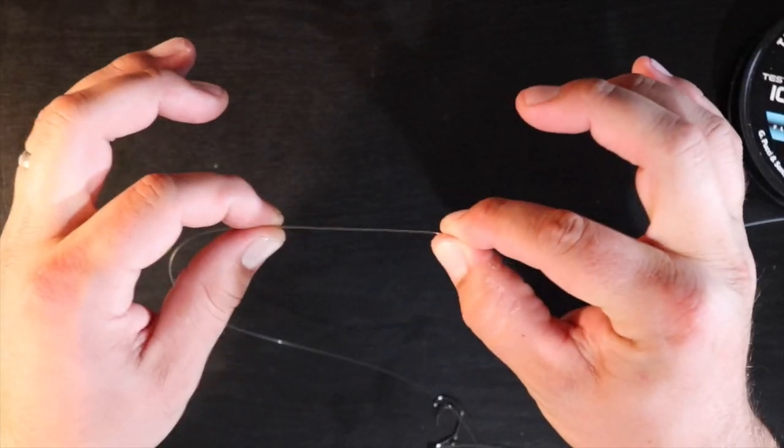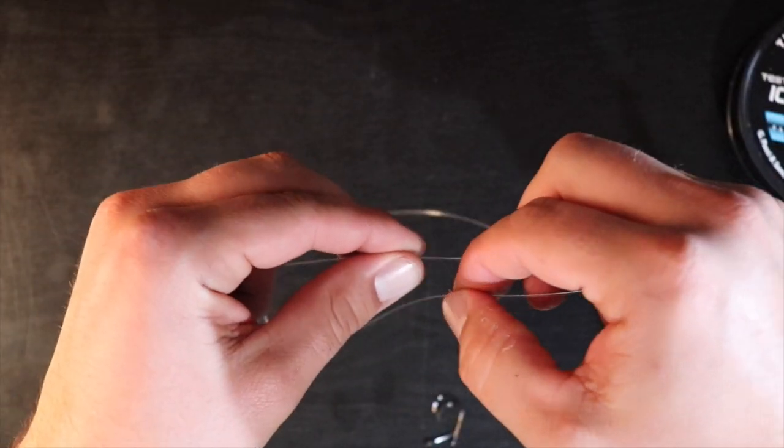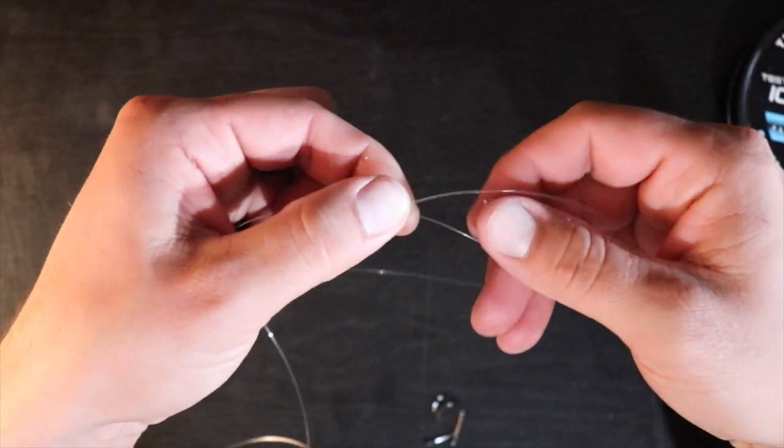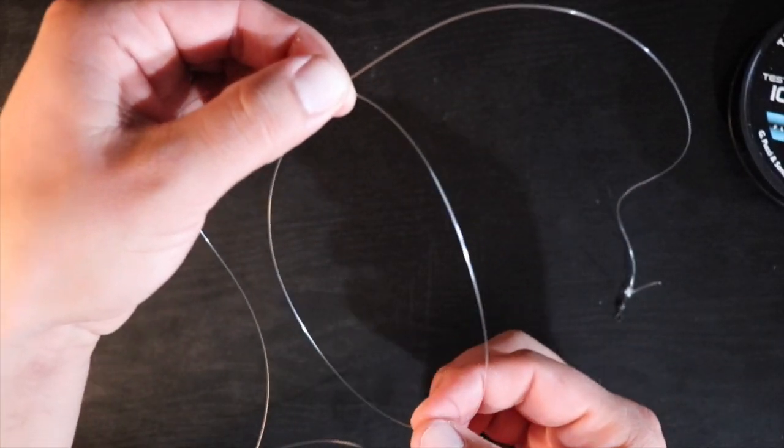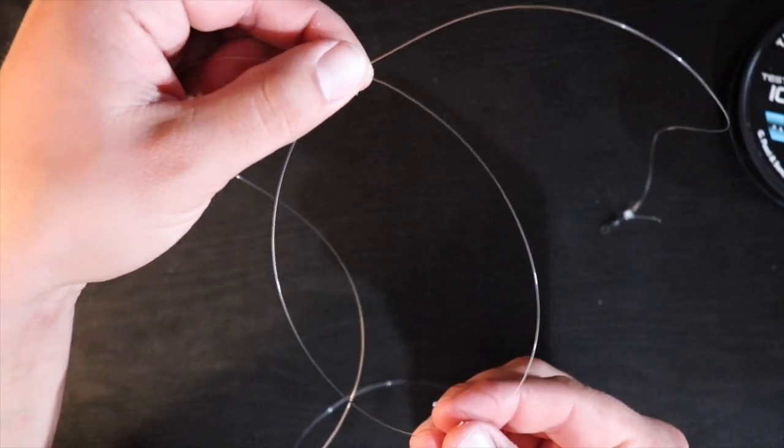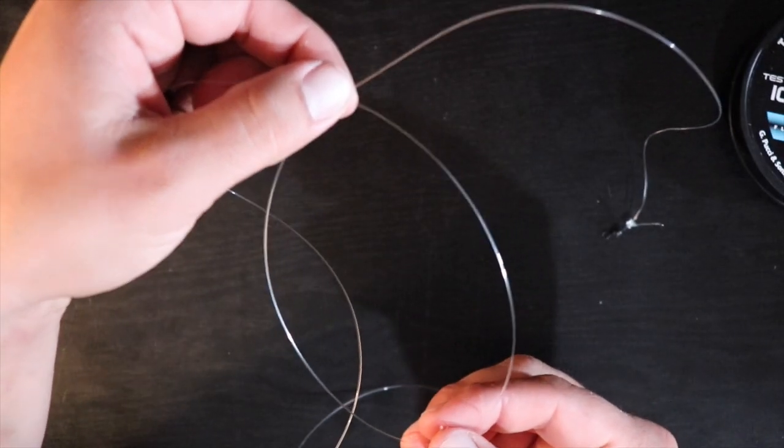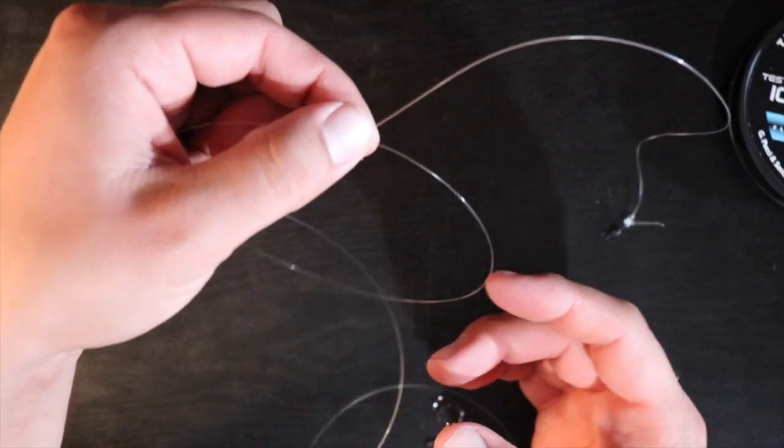All right, so once I got that barrel swivel on, I'll go ahead and go down about 12 to 14 inches or so, pinch the line, then I'm going to go down another 12 inches or so and I'm going to make a loop with that line. That's going to give us a loop right here.